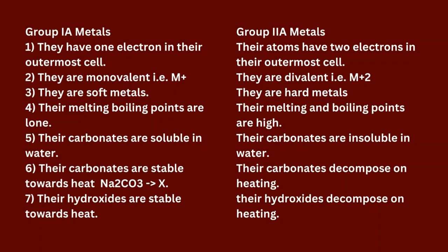Group 2A metals: (1) Their atoms have two electrons in their outermost shell. (2) They are divalent (M2+). (3) They are hard metals. (4) Their melting and boiling points are high. (5) Their carbonates are insoluble in water. (6) Their carbonates decompose on heating. (7) Their hydroxides decompose on heating.